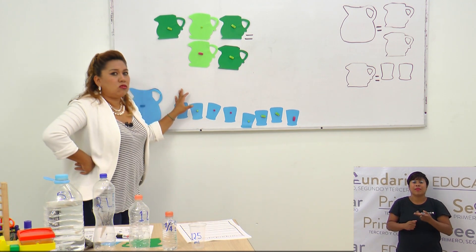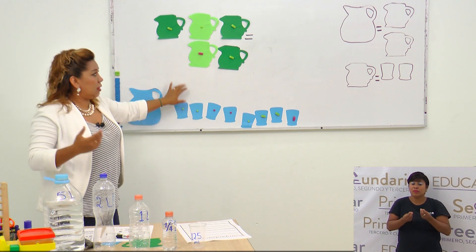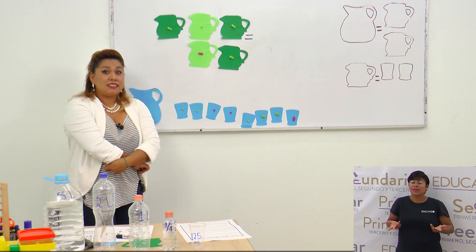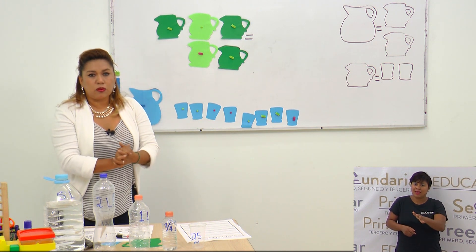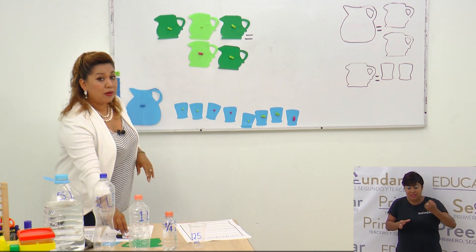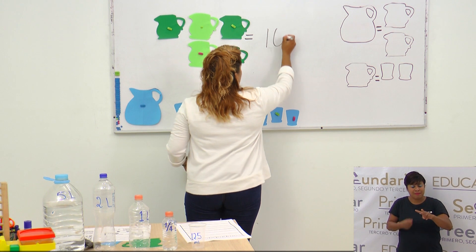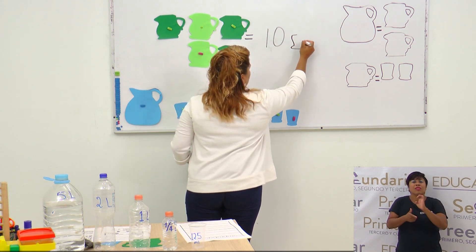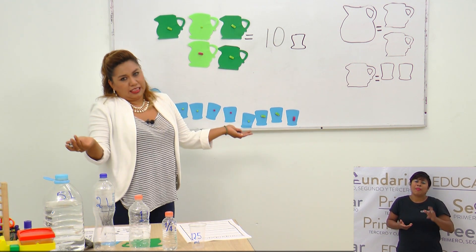Si los que llegaron a comer son veinte, ¿cuántas jarritas necesito? Necesito diez. ¿Por qué? Porque de cinco jarras me salen diez vasos, entonces de diez jarras me saldrán veinte vasos.